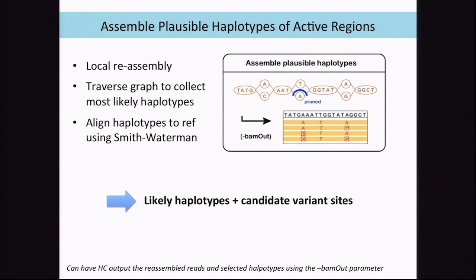People often want to know what the reads look like after realignment. You can see that by using the bamout parameter — give a filename as your BAM file and it'll output the realigned reads, which you can compare to the original BAM. Once we've traversed the graph to get our most likely haplotypes, we align them to the reference using the Smith-Waterman algorithm. Out of this step we end up with our most likely haplotypes and the candidate variant sites.